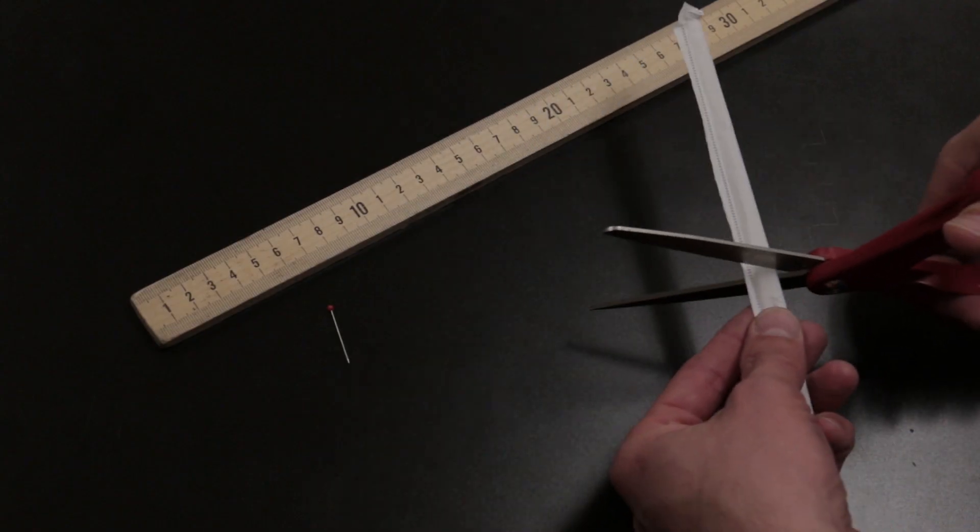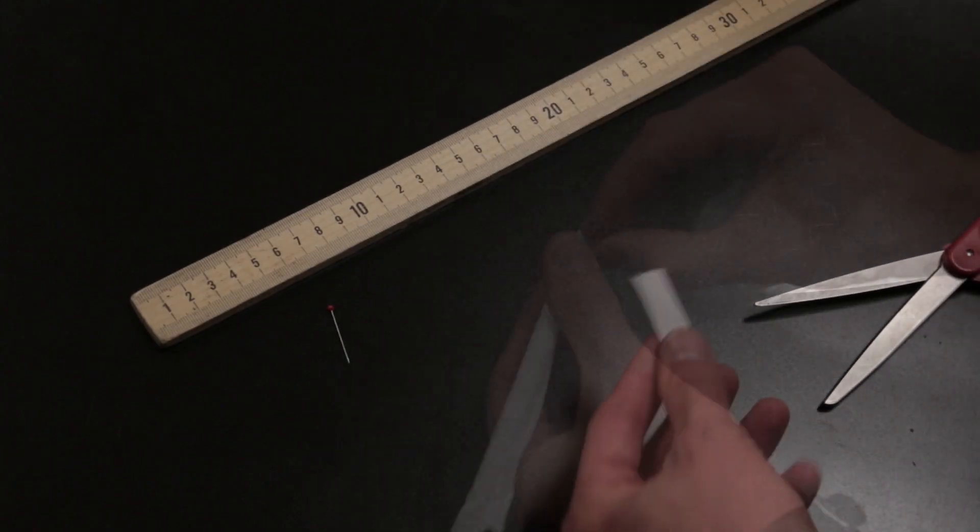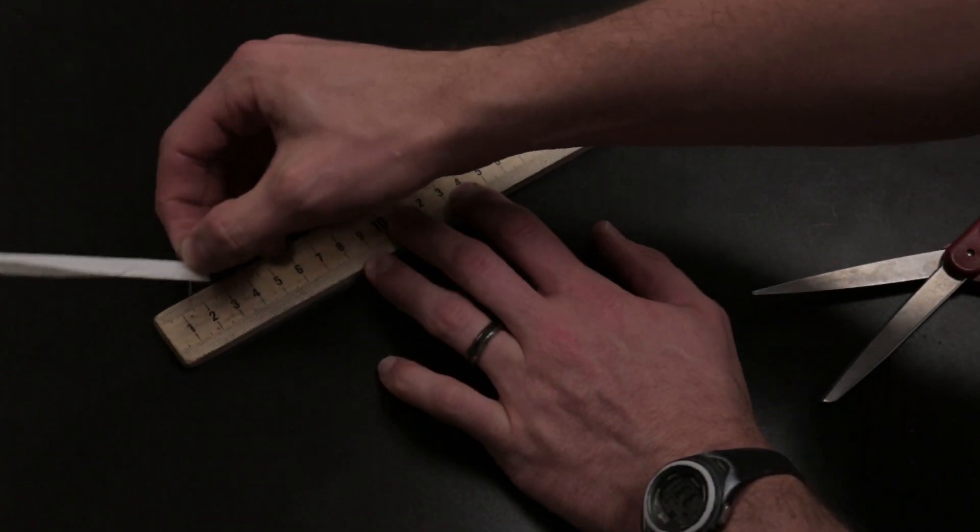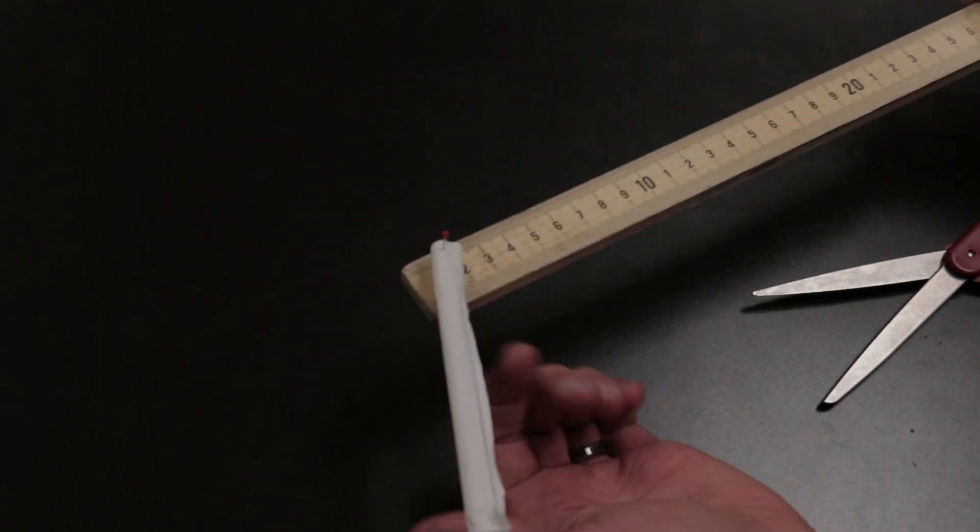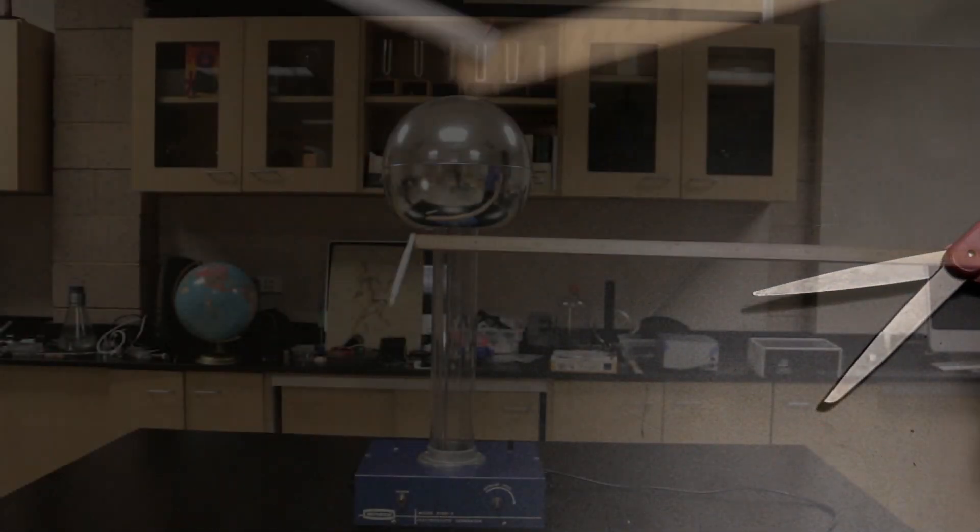But I think the most convincing way to show the electric field is with a straw cut in half, and pinned to a meter stick. Now, you can probe the space around the dome effectively.